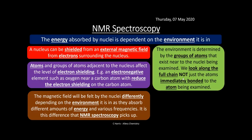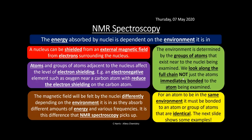The environment is determined by the groups of atoms that exist near the nuclei being examined. We look along the full chain, not just the atoms immediately bonded to the atom being examined. Just like being influenced by people further down the street, a carbon is not just influenced by the immediate atoms on either side — it's influenced by a full range of atoms all the way down the carbon chain. For an atom to be in the same environment, it must be bonded to an atom or group of atoms that are identical.